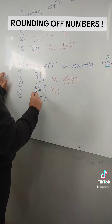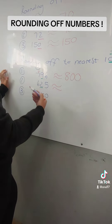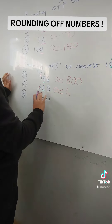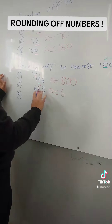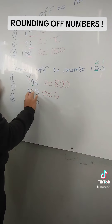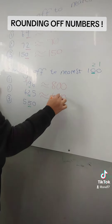Let's look at the second one. This is a 2 — it's less than a 5, so it's not going to have an impact on the 6. So 6 stays a 6, and after it becomes 0, 0.